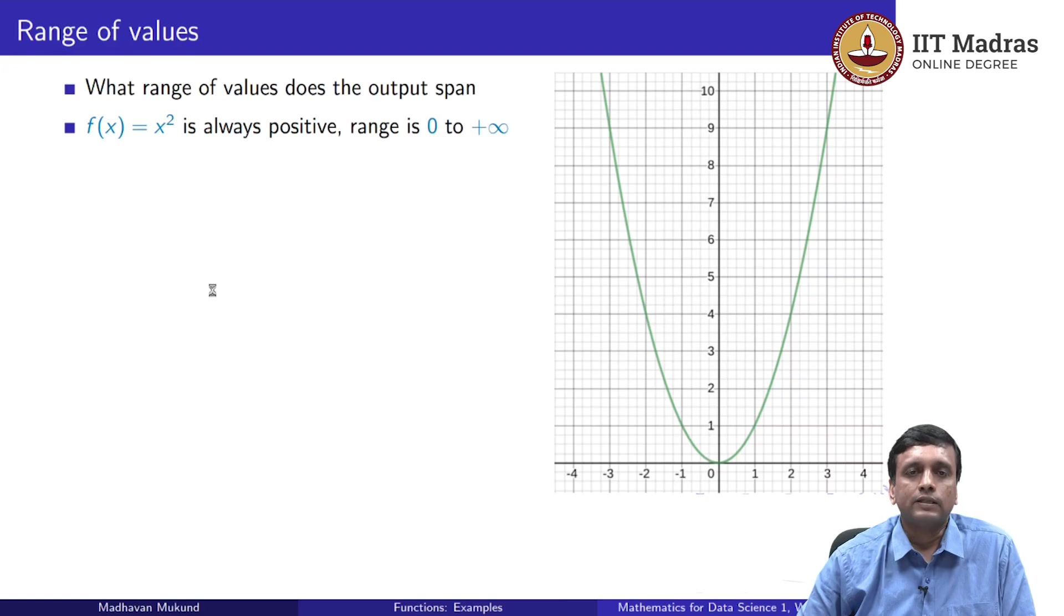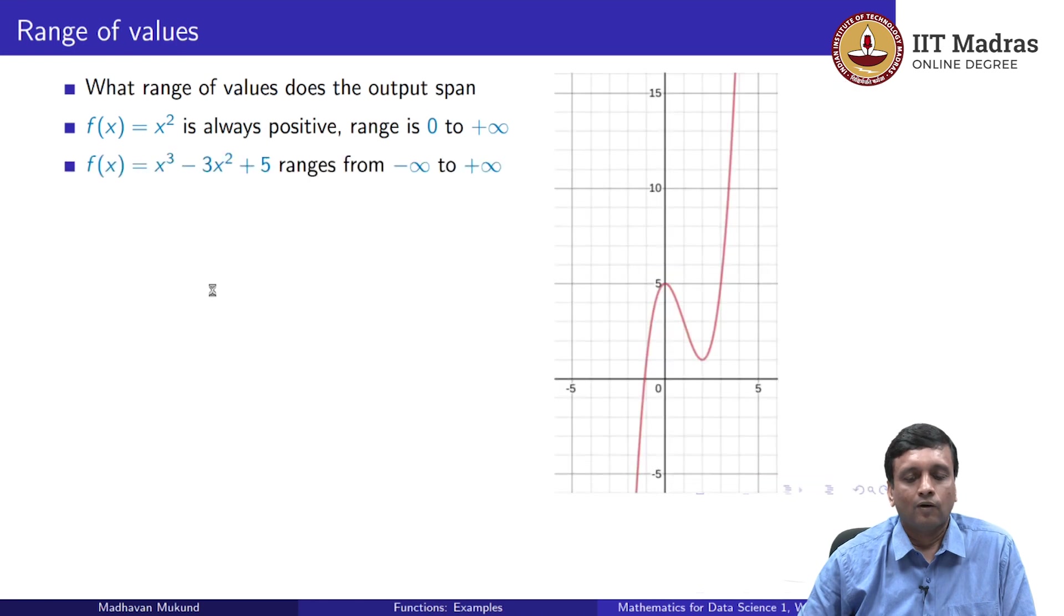So as we saw, this square function f(x) = x² is always positive. So we always get something between 0 and plus infinity, there is no upper bound, but we never get something which is negative.